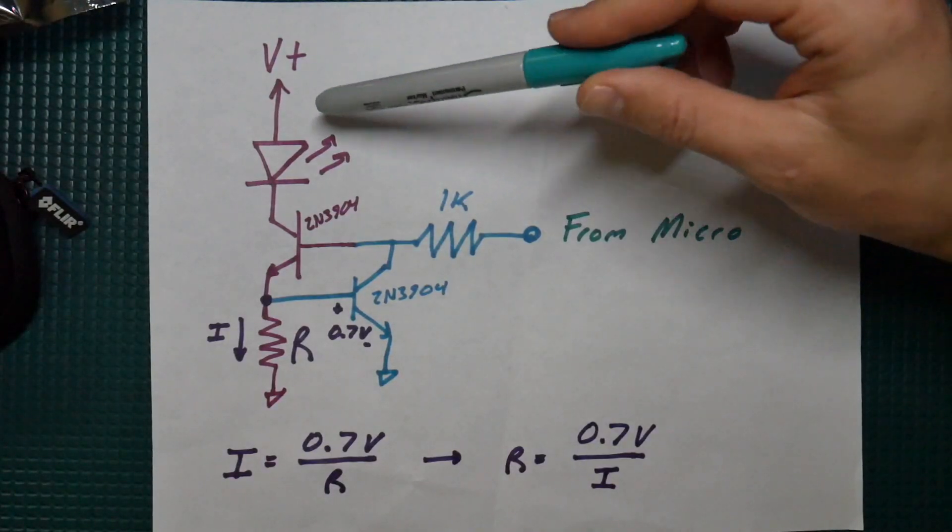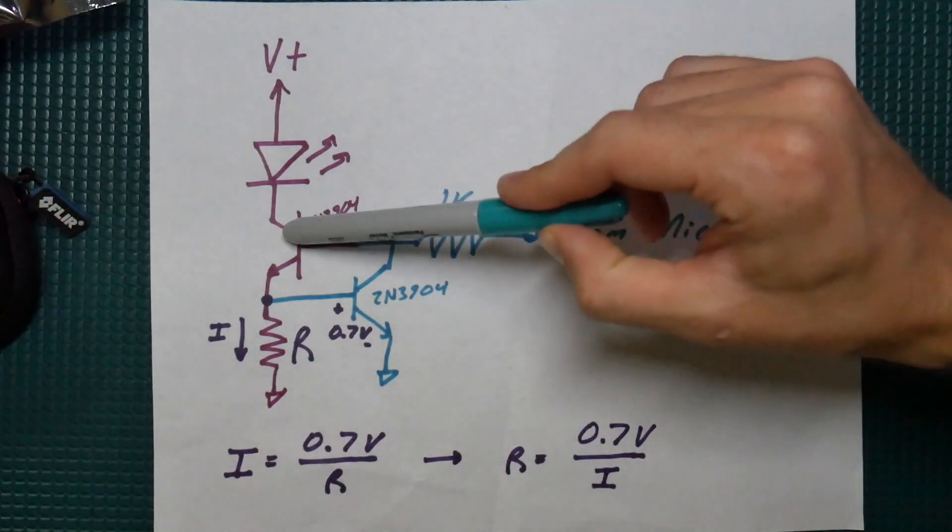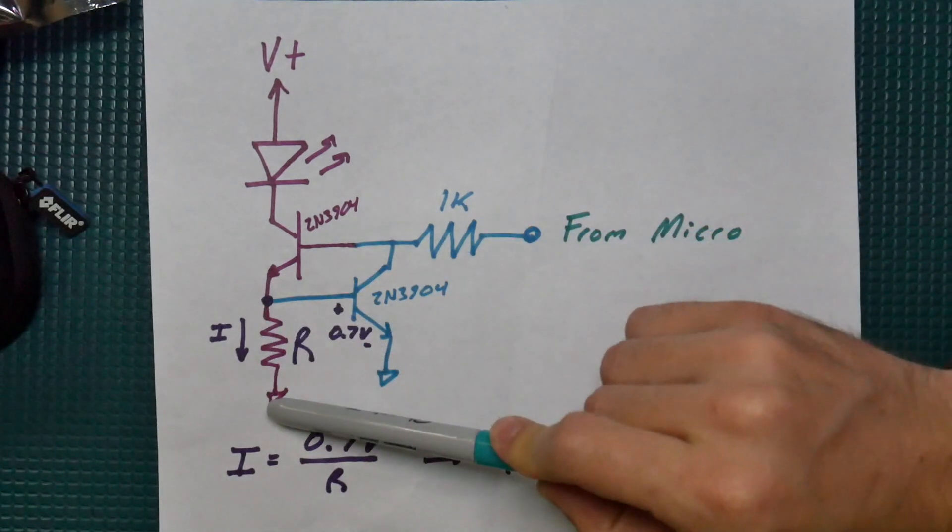Yeah so here's that circuit from the last video. We had the constant current going through the LED, through the red transistor, through R then to ground.